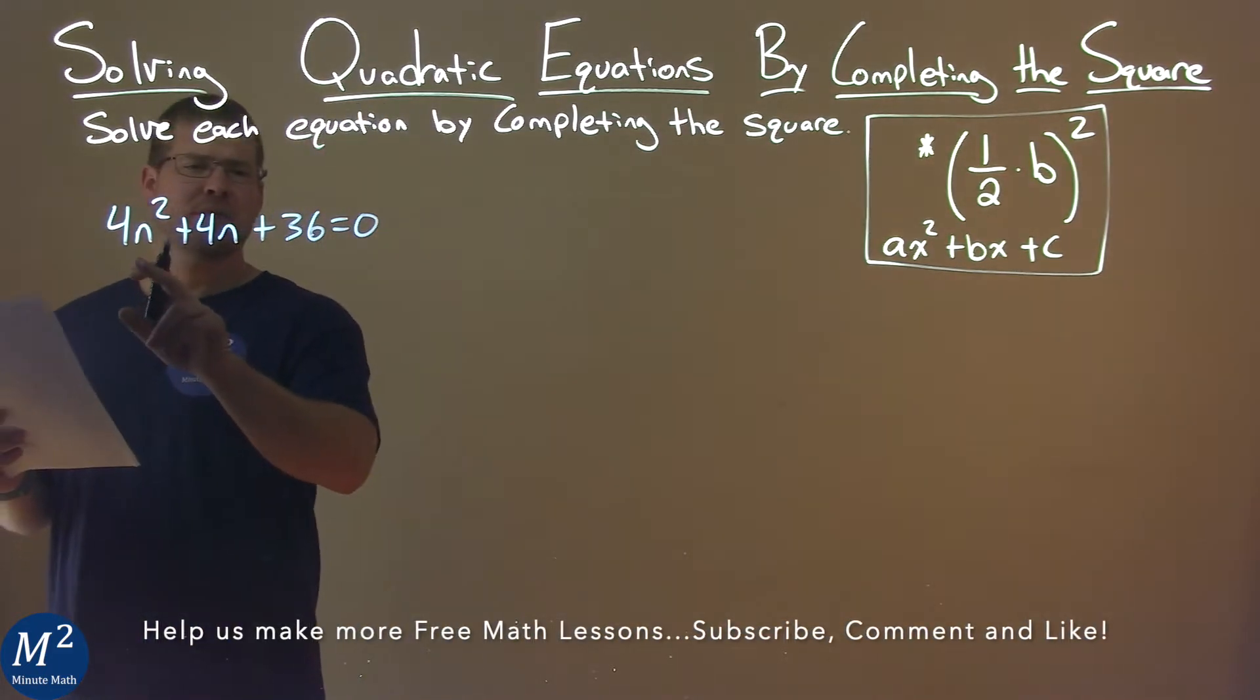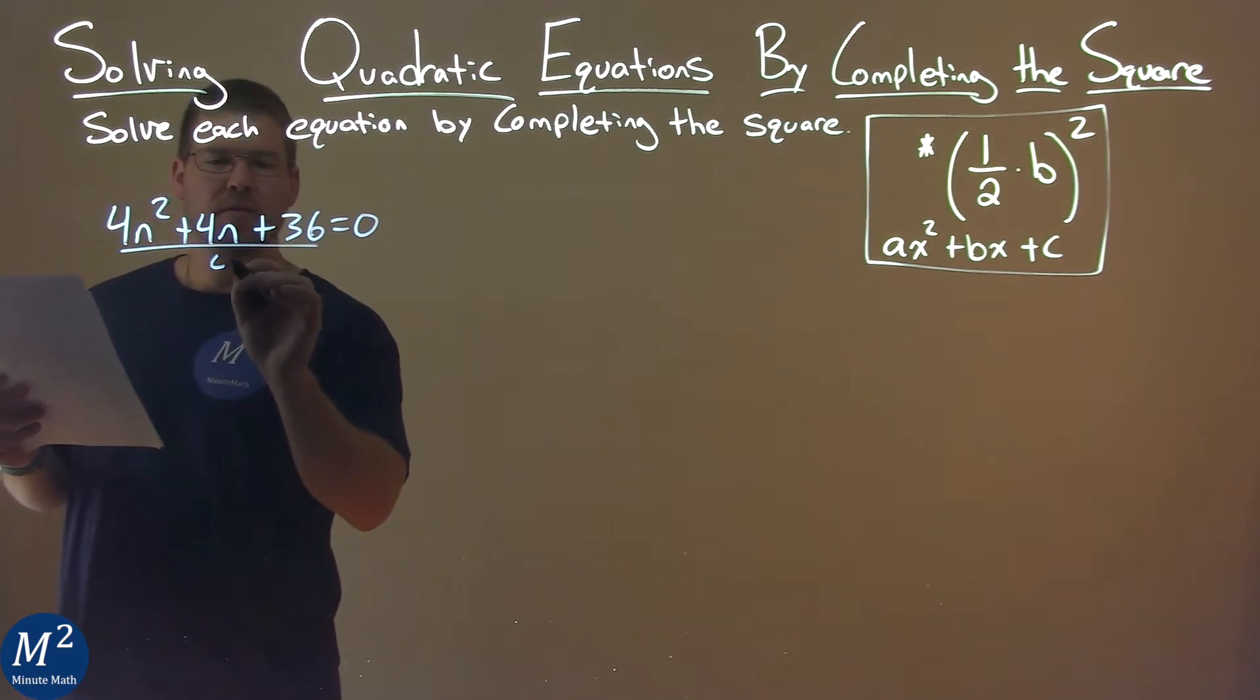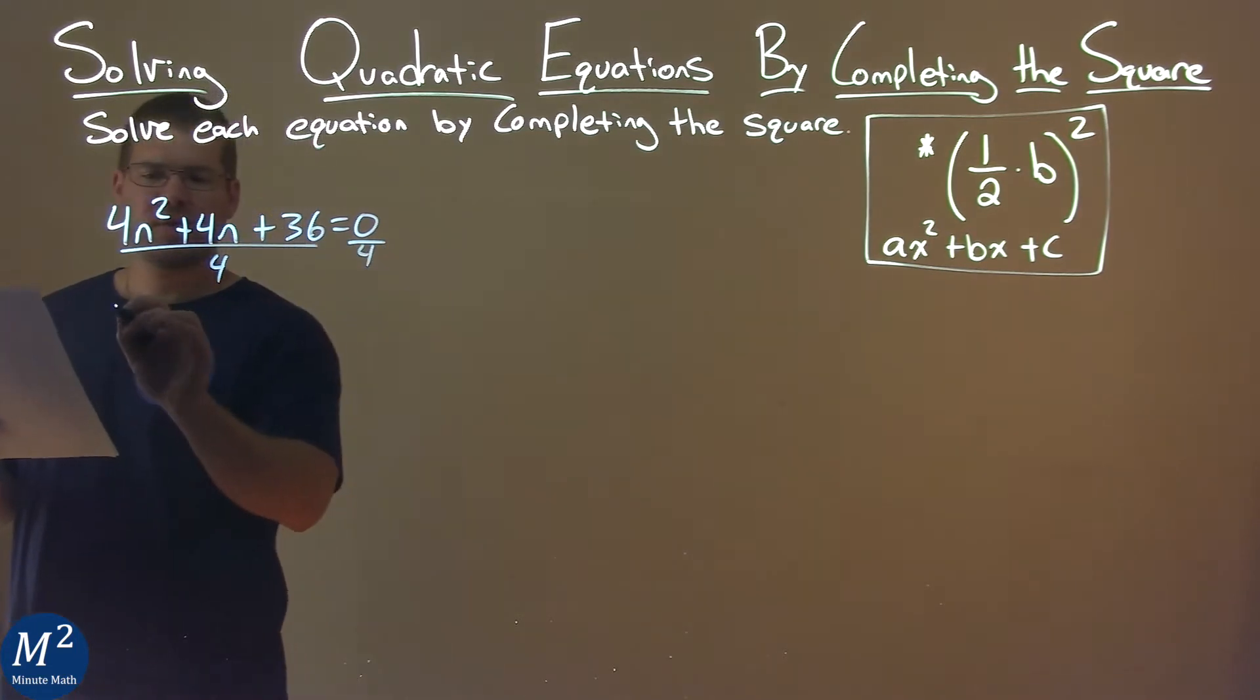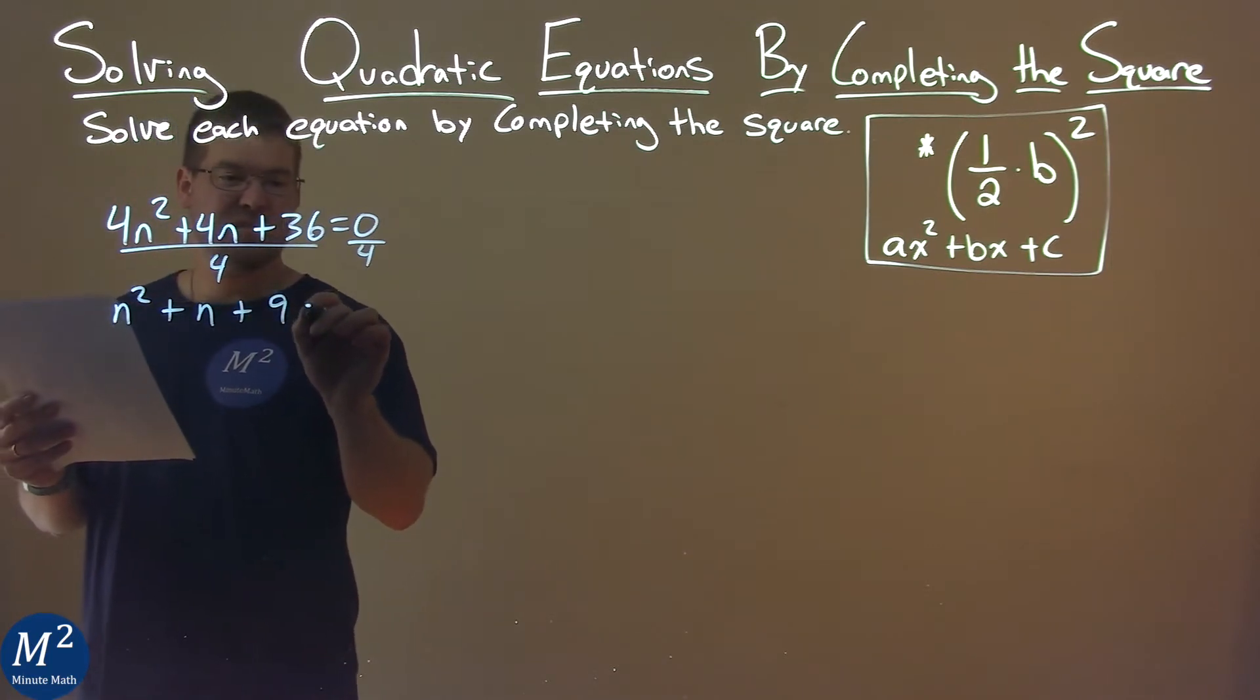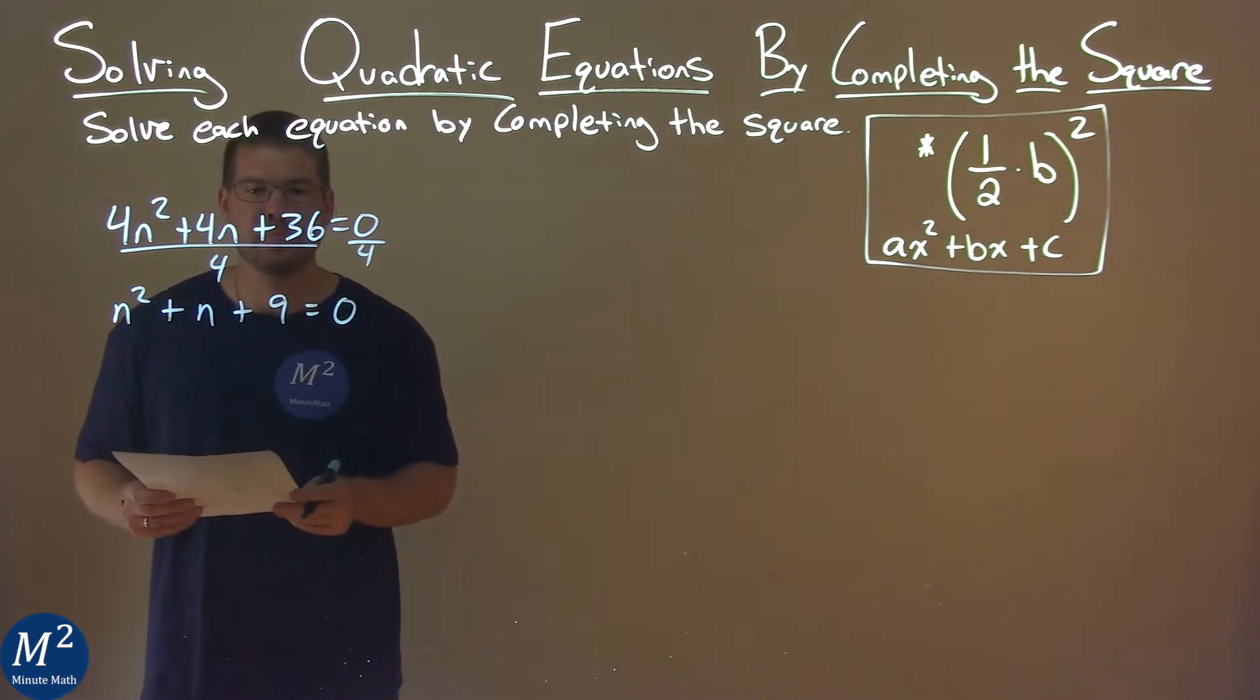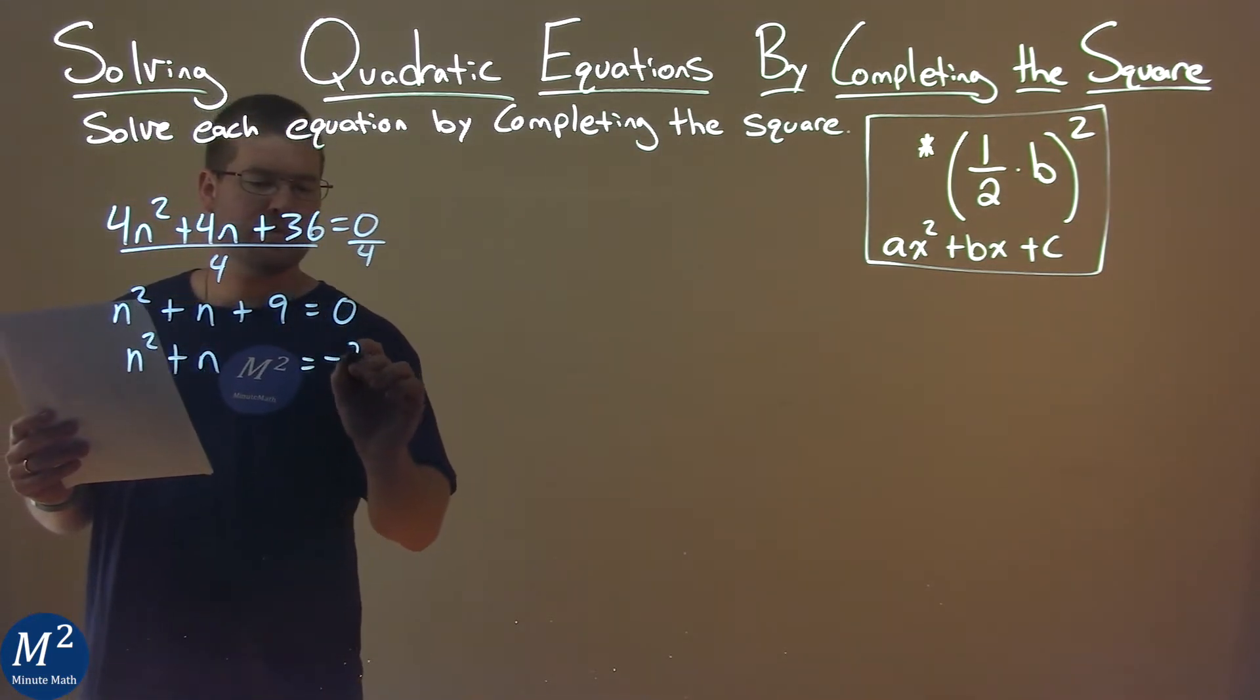First thing I notice is why don't we divide both sides by 4, that a value. So I do that and I'm left with n squared plus n plus 9 equals 0. I'm going to subtract 9 from both sides, so I have n squared plus n, and I'm going to leave a space, equals negative 9.